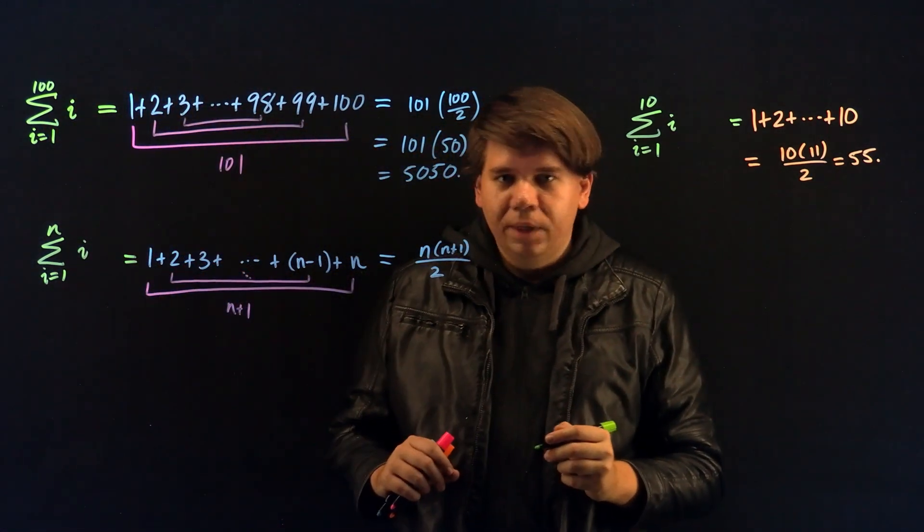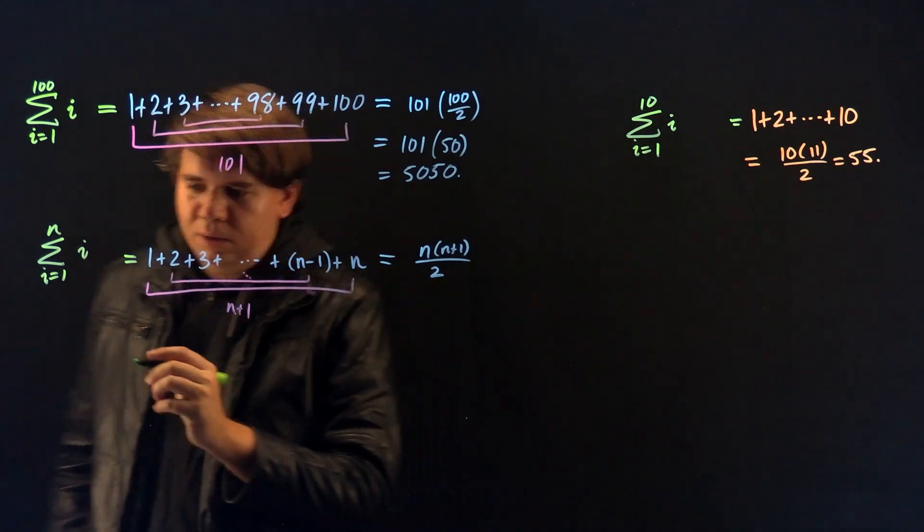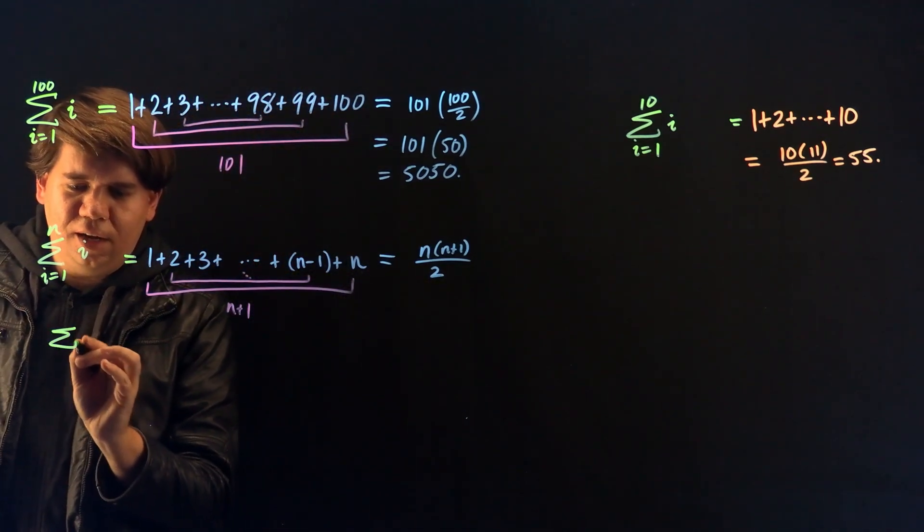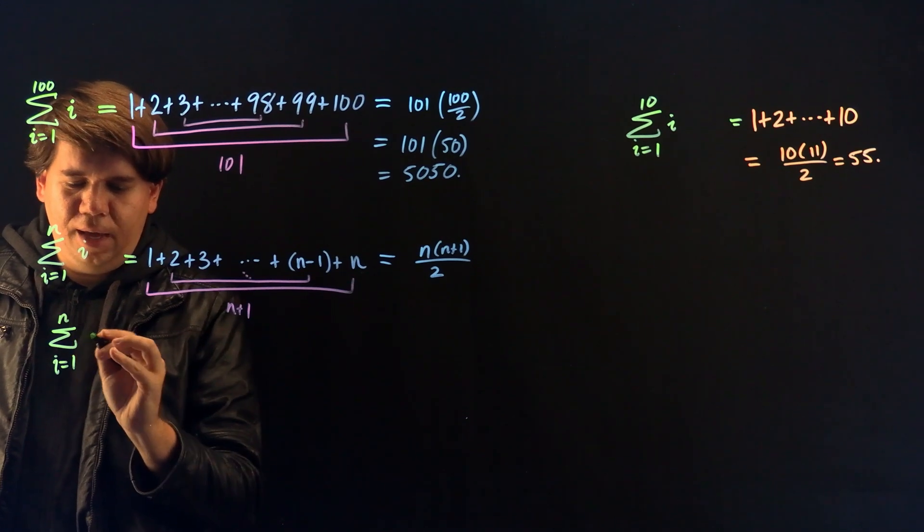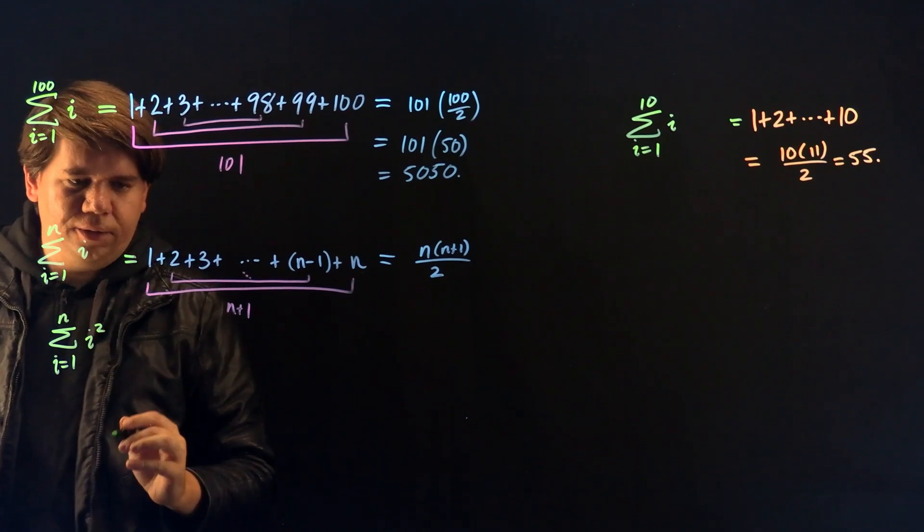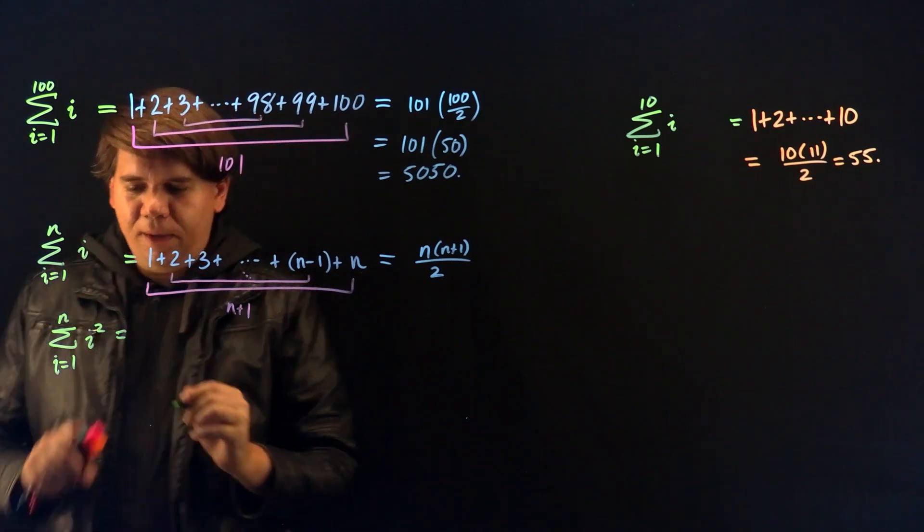I introduced this notation because now we can introduce small variations, like what is the sum from i equals 1 to n of i squared. Let's think about what this means.